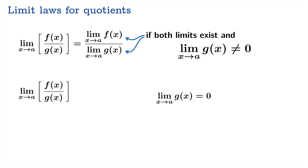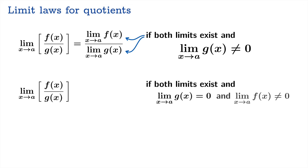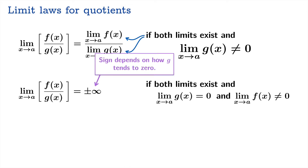Even if the limiting value of the denominator is zero, there's still a chance you can say something useful. If the numerator function has a non-zero limit, then the limit of the quotient is going to diverge to infinity or negative infinity. The sign depends on how g tends to zero — whether the values of g go to zero through positive or negative values. There's also a pathological case where the values of g hit zero infinitely often as x approaches a, in which case the limit of the quotient would fail to exist in a rather pathological way.